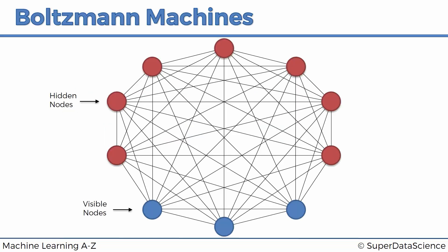Here we've got the standard Boltzmann machine, or the full Boltzmann machine, where every single node connects to every single other node. While in theory this is a great model that can solve lots of different problems, in practice it's very hard to implement. We run into a roadblock because as you increase the number of nodes, the number of connections between them grows exponentially.